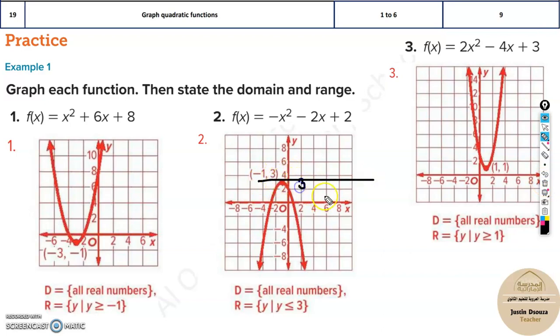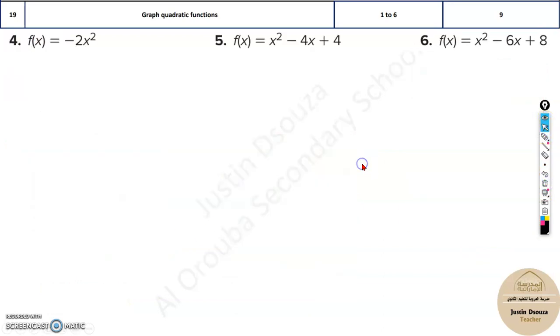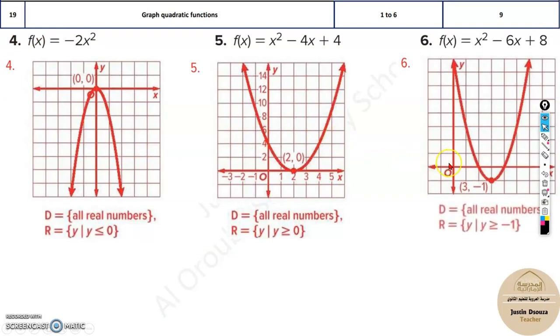Over here you can see the y value is 3 and it goes down from 3. So that means all the values of y less than or equal to 3 is the possibility of range. But it can't be above because there is no part of the graph above 3. So the range would be less than or equal to 3. Same way for the other problems, over here the range is more than 1, so it is more than or equal to 1. Over here it was more than or equal to -1.